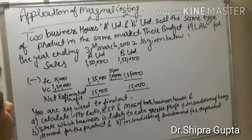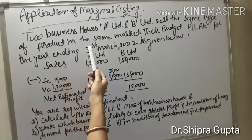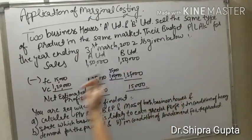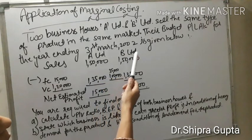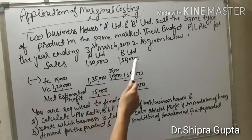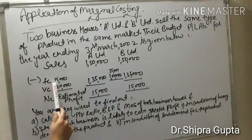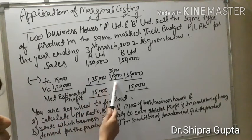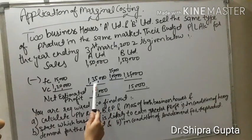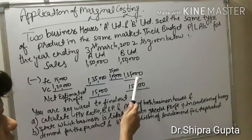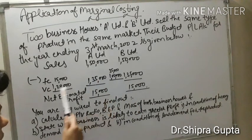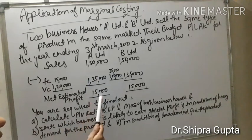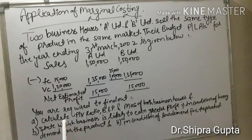Now we will solve a problem on application of marginal costing. Two business houses, A Limited and B Limited, sell the same type of product in the same market. Their budgeted profit and loss account for the year ending 31st March 2002 is: Sales — A Limited: 1,50,000; B Limited: 1,50,000. Fixed cost — A Limited: 15,000; B Limited: 35,000. Variable cost — A Limited: 1,20,000; B Limited: 1,00,000. Total cost — both: 1,35,000. Net profit — both: 15,000.